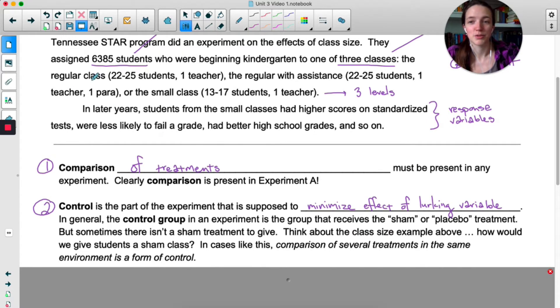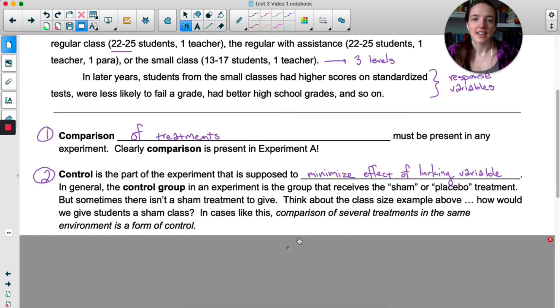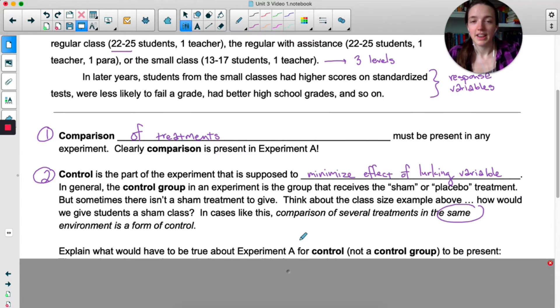You could consider this regular class to be the control group, but many schools would say 25 students isn't regular, that's small. In cases where you can't have a true placebo, comparison of several treatments in the same environment can be a form of control. This same environment is how you control for lurking variables. So take a moment and think about Experiment A. What types of things should we try to control so that the different treatments are as similar as possible?